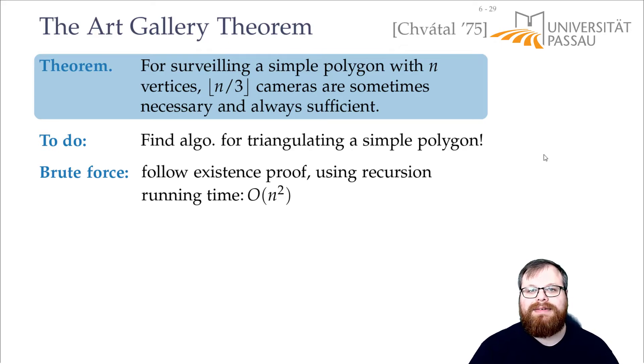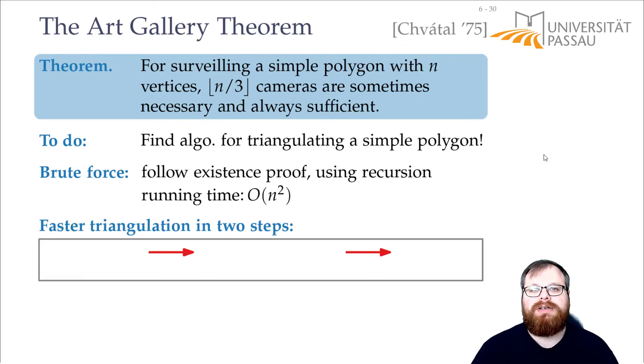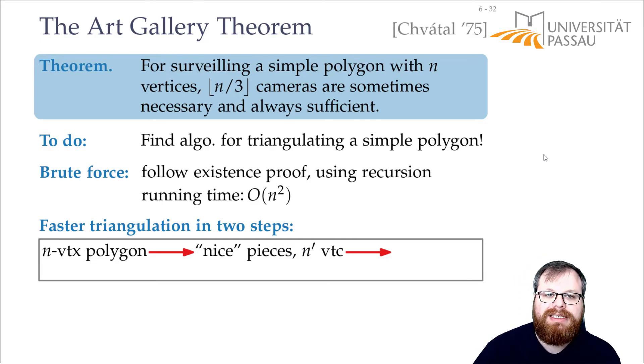And indeed, we can get a faster triangulation if we use two steps instead of one. So we are given some polygon, a simple polygon with n vertices. In the first step, we want to partition it into nice pieces. And our nice pieces now are not triangles anymore, but something larger. And then we want to partition all these nice pieces into triangles.